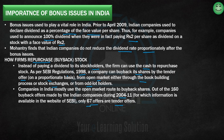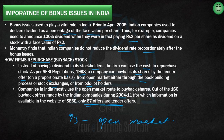In tender offers, the company formally approaches people and says it wants to buy back. The remaining 93 were through open market trading, where the company traded normally to buy back its shares. In the US, the Dutch auction method is also allowed — shareholders submit offers stating how many shares they want to sell and at what price, and the company decides how many shares to buy back at what price. This is not allowed in India.